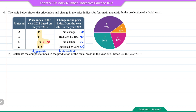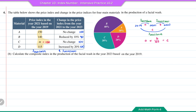To find the price index in 2023 based on 2019, we use the chain index method: index(2021 based on 2019) times index(2023 based on 2021) divided by 100. This gives the index(2023 based on 2019) for each material.